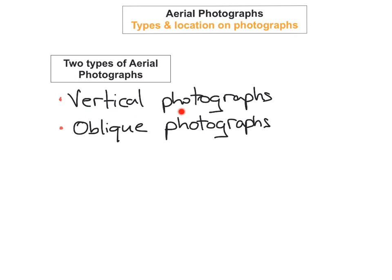You need to be able to identify in the Junior Certificate examination whether an aerial photograph is vertical or oblique. A vertical photograph is when the horizon cannot be seen in the background — the camera is directly over the area being photographed. An oblique photograph is when you can see the horizon in the background, because the camera is placed at an angle. In oblique photographs you can usually see the sides of buildings, whereas in a vertical photograph it's like a bird's eye view looking directly down, so you cannot see the sides of buildings.